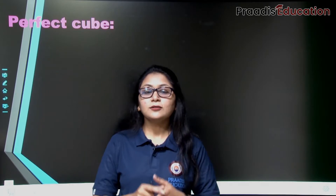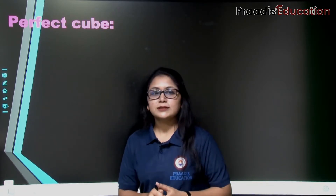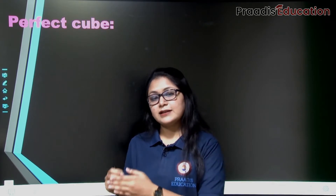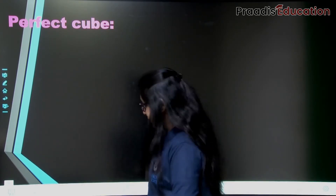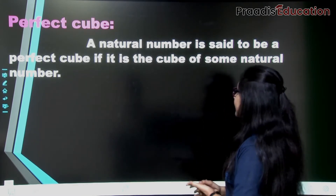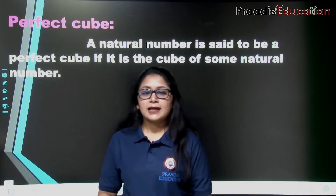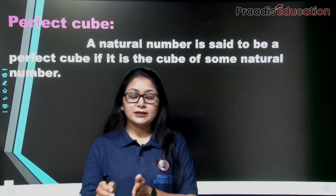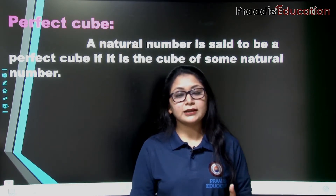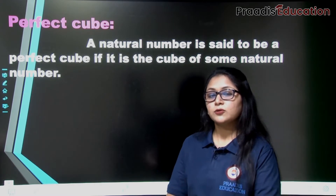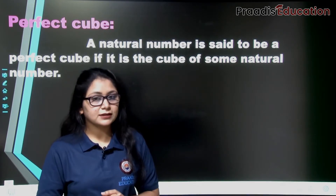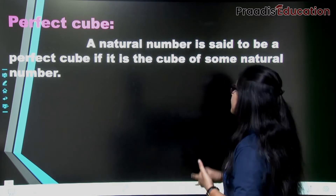Now we have known about perfect squares. Here is a new term: perfect cube. Just as you have the concept of a perfect square, there is a similar concept for perfect cube. A natural number is said to be a perfect cube if it is the cube of some natural number. Natural numbers are numbers starting from 1 to infinity. We call a number a perfect cube when it is the cube of some natural number.